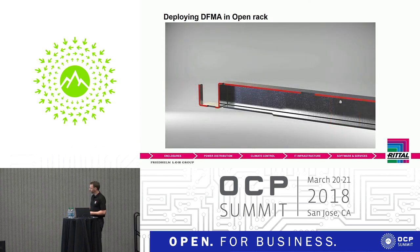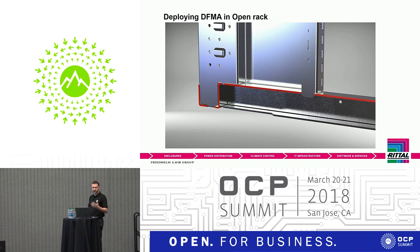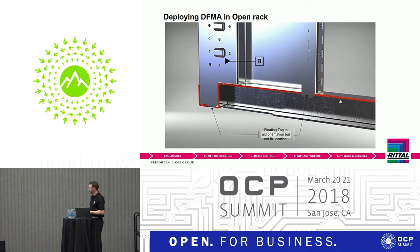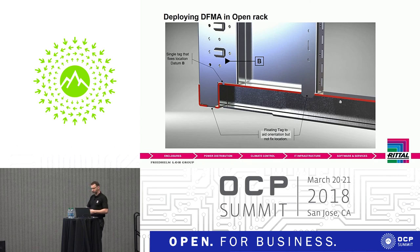A secondary tag aids orientation so the part isn't twisted in assembly, but it doesn't determine position — position is always determined by a single tag in direct line with your datum. At the rear, the rear member's tags engage into the base tray similarly; datum B is the face equipment stop at the back. Two tags on that one orientate the part and prevent twisting, with one tag in line with datum B pinning the part in location. All piercings in the base tray are on one plane, so the piercing dimension of plus or minus 1.15mm can be easily controlled, with no jigs or fixtures needed.